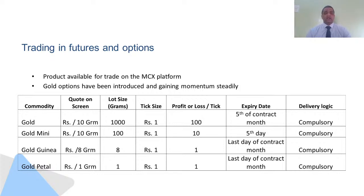This option is necessary to understand from the perspective of trading in gold futures and options. There are four products available on the gold futures platform provided by MCX. The first product available to trade is gold, which is a 1,000 gram or one kg lot size. Every one rupee move upside or downside in this contract will give you a profit or loss of 100 rupees. The expiry is the fifth of the contract month — for instance, if it is a December expiry, the fifth of December acts as the expiry date. The delivery logic stands compulsory, meaning if you keep your positions till the fifth of the contract month, you are liable to take delivery.